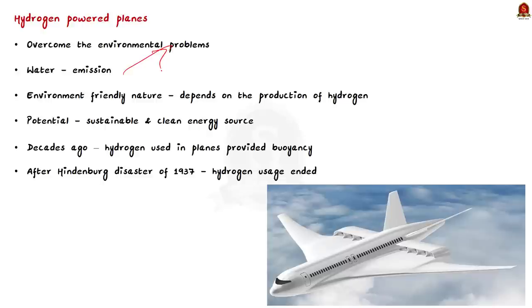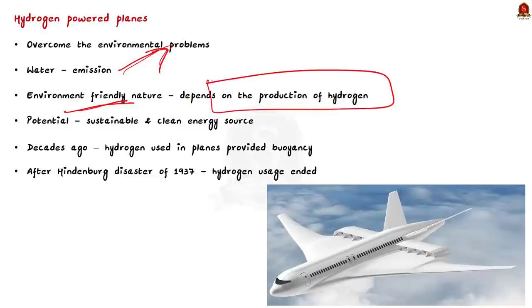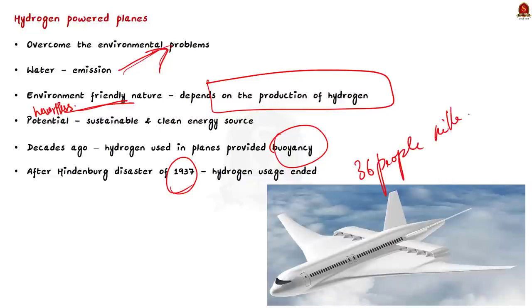Hydrogen fuel is being seen as a potential answer to the environmental problems of air travel, since water would be the only emission from hydrogen-powered aircraft. The method of hydrogen production informs how environmentally friendly it is. Note that hydrogen was used in flight many decades ago where it provided buoyancy. However, the Hindenburg disaster of 1937, where the dirigible full of hydrogen gas caught fire killing 36 people, effectively ended this type of hydrogen use for flight.